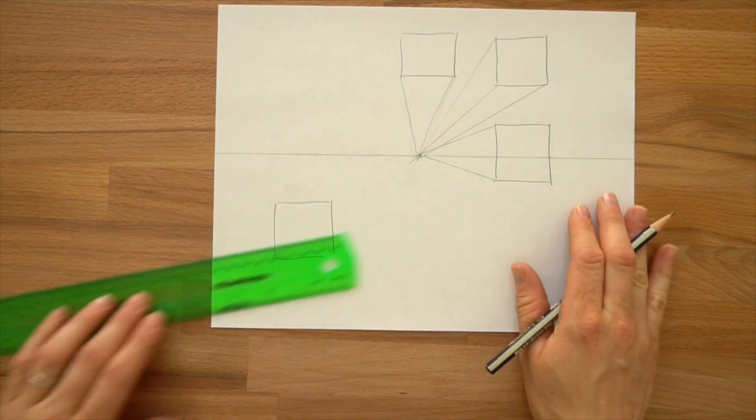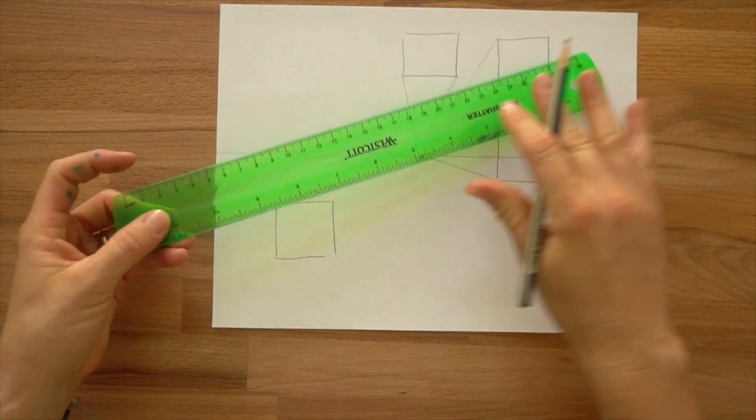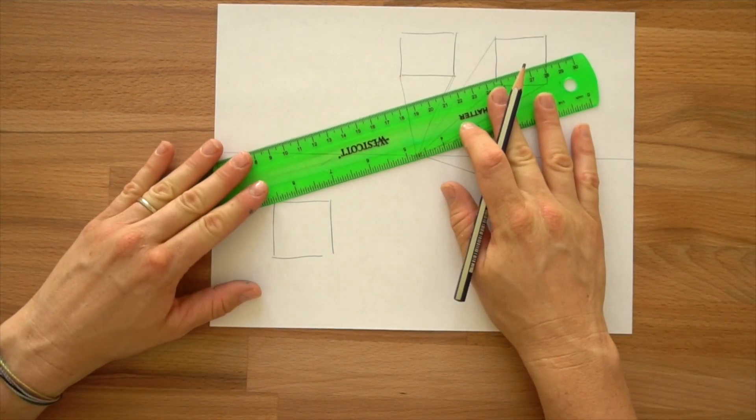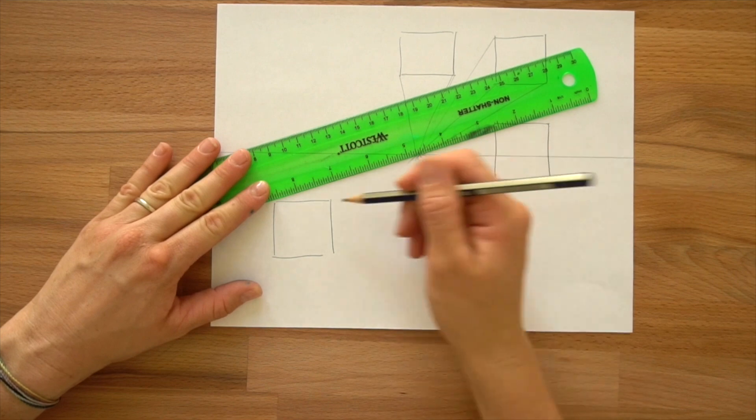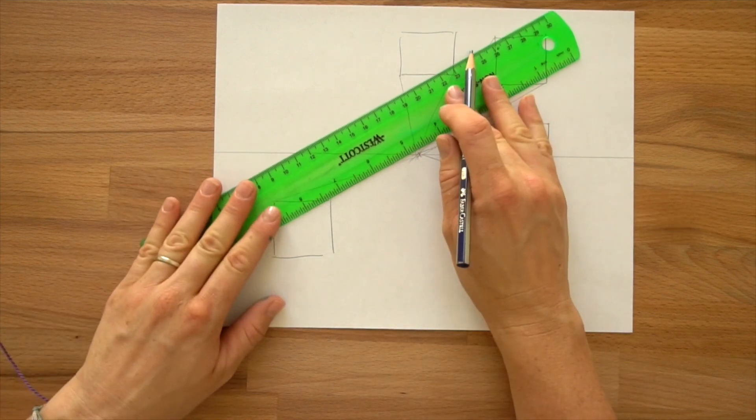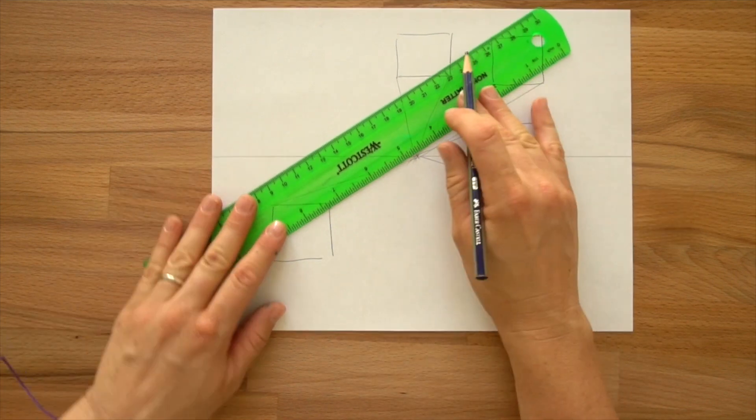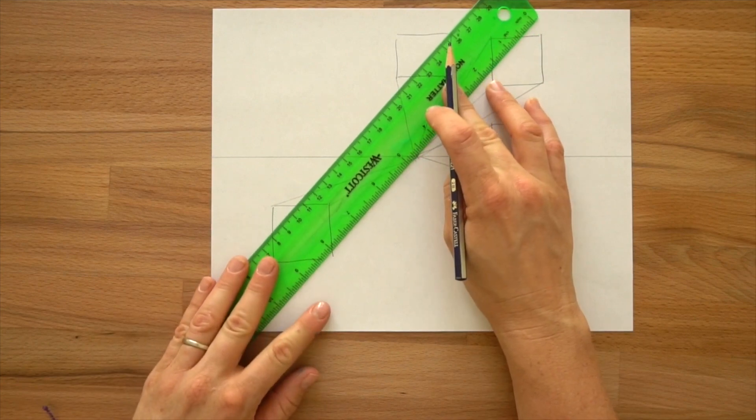We're going to ignore anywhere where the line would go through it, like this corner. Just ignore that one because this is a solid box, like a building, and we can't see it. If you don't have a ruler, you could just try your best to draw a straight line back to the vanishing point.